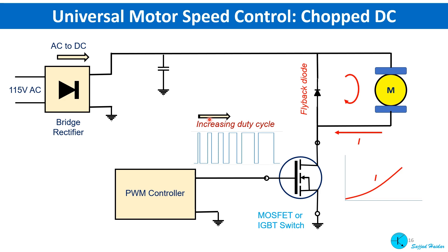Here is a basic diagram of a PWM speed control system. The AC mains is converted to DC by a rectifier, and a capacitor is used to filter the ripple. A MOSFET or IGBT is used as a power switch, and a PWM signal is applied to the gate. The DC experienced by the motor is chopped — if the pulse width is wide, the motor gets higher current; if the pulse width is narrow, the motor gets lower current. A flyback diode is connected in reverse bias at the motor terminal. Since motors are inductive loads, when power is off a very high voltage can develop, and this inductive surge is fed back into the motor by the diode.